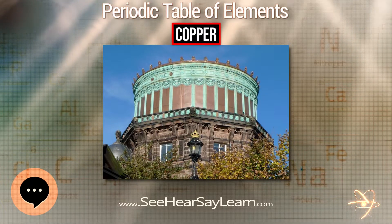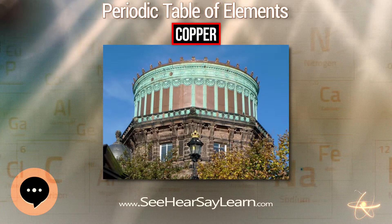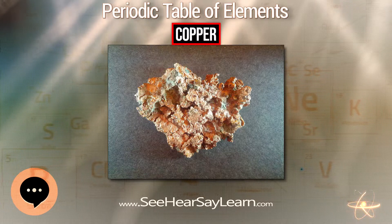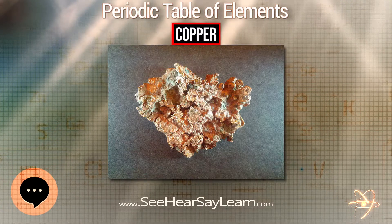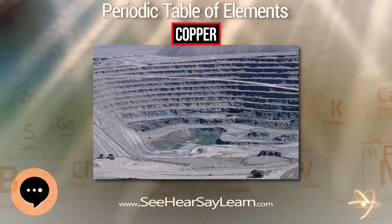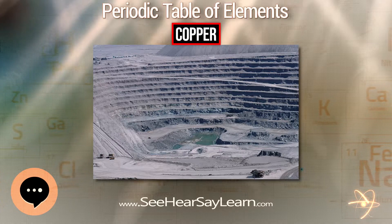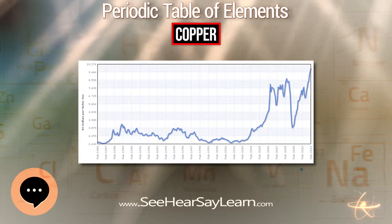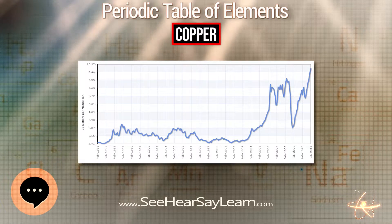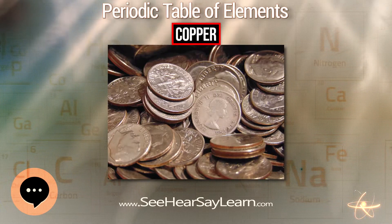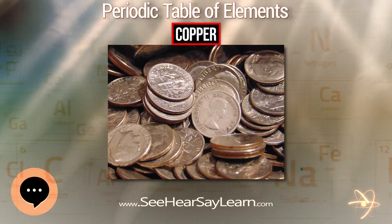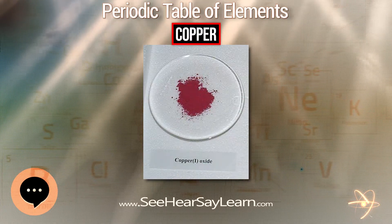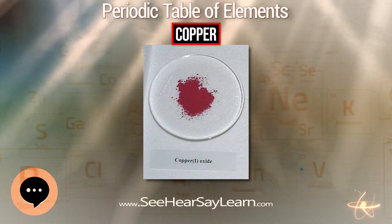Isotopes with a mass number above 64 decay by beta minus, whereas those with a mass number below 64 decay by beta plus. ⁶⁴Cu, which has a half-life of 12.7 hours, decays both ways. ⁶²Cu and ⁶⁴Cu have significant applications; ⁶²Cu is used in ⁶²Cu-PTSM as a radioactive tracer for positron emission tomography.